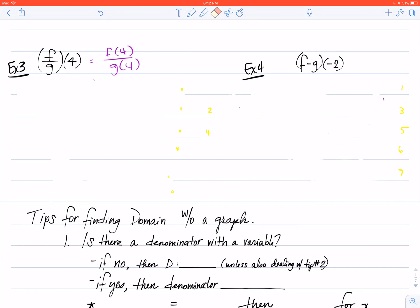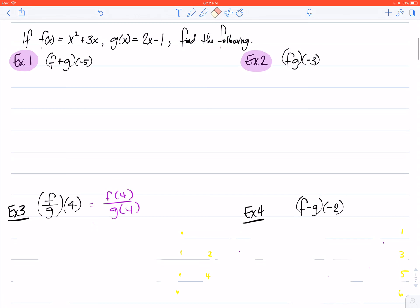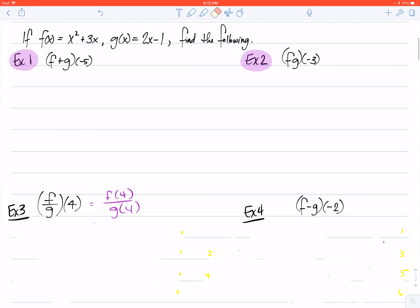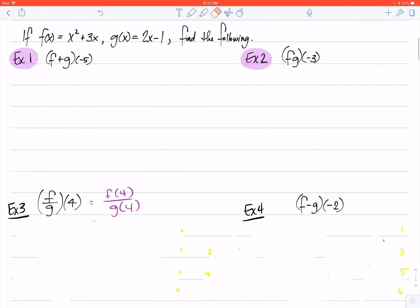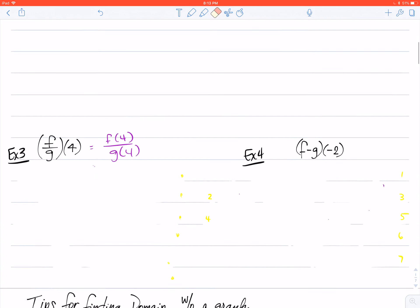Now you all know how to find f of 4. Just to remind you, the two given functions are written in the directions up there: x squared plus 3x for f, and 2x minus 1 for g. All we need to do then is take 4 and plug that into the f function.